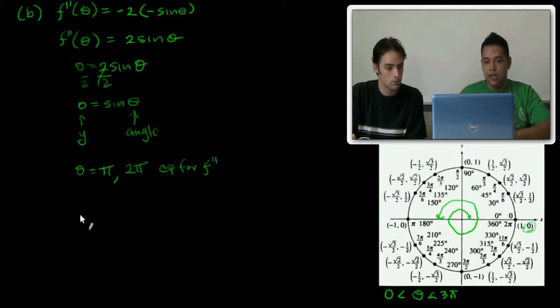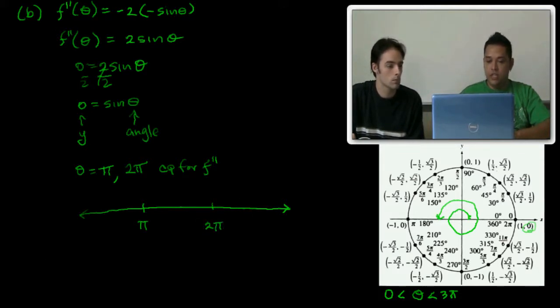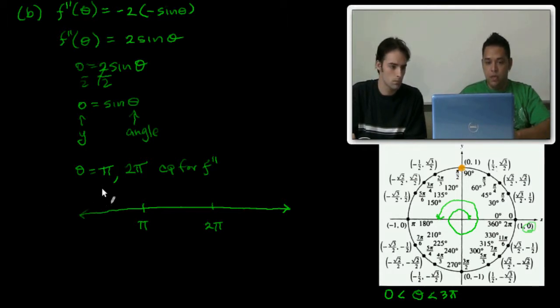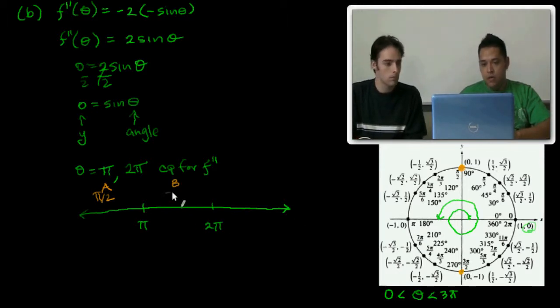So we need our number line. We're going to label the 2 critical points, which is π and 2π. What would be our test points? For region A, the first region I chose π/2. Choose this one as a test point. Region A would be π/2. Next, we need one in between π and 2π, so I chose 3π/2.